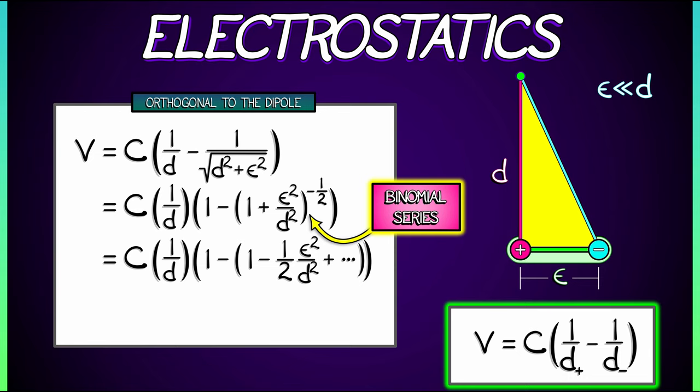Notice that those ones cancel out. We are left with C times epsilon squared over 2D cubed.